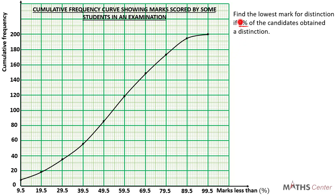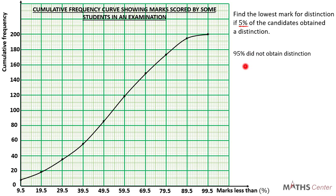The total number of students represents 100%. If 5% obtained a distinction, then 95% did not obtain a distinction. The total number of students is 200, since the last cumulative frequency is 200. So the number of students who did not obtain a distinction is 95% of 200, which equals 95 divided by 100 times 200, giving us 190. So 190 students did not obtain a distinction.